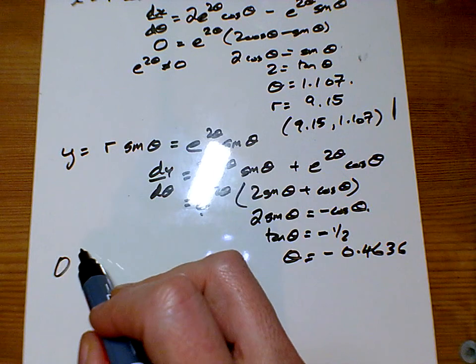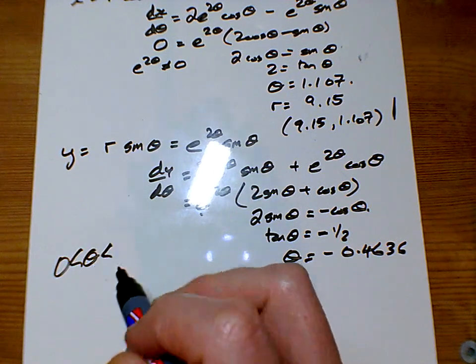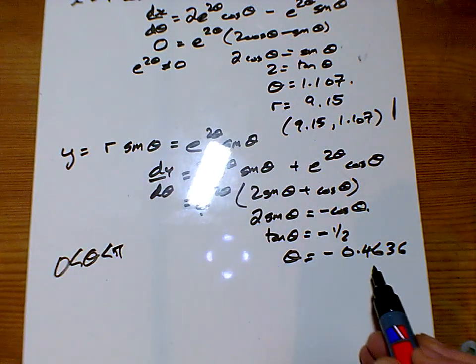Yeah, the angle's got to be from 0 to pi. So I've got the wrong answer to the tan. How do you get your second answer on the tan?